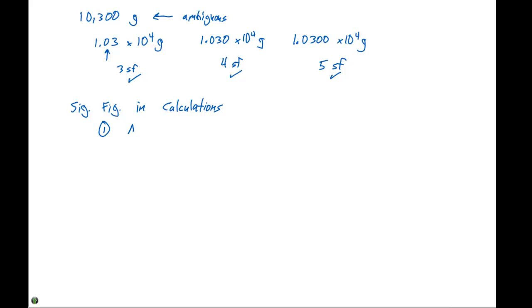The first is addition and subtraction. And for addition and subtraction, the resulting number will have the same number of decimal places as the measurement with the fewest decimal places.